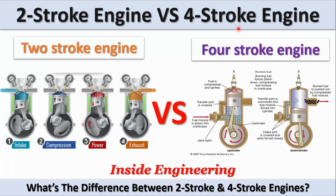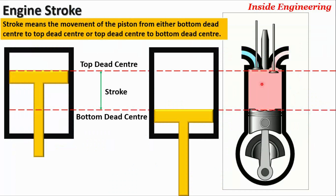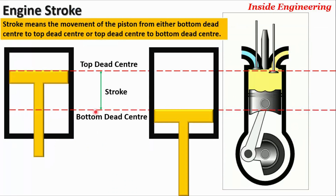To understand how these engines are different, first we must understand the meaning of the stroke. Stroke, or engine stroke, means in simple terms the movement of the piston inside the cylinder. The piston moves up and down in the engine cylinder within two extreme limits — the lower limit called the bottom dead center and the upper limit called the top dead center.